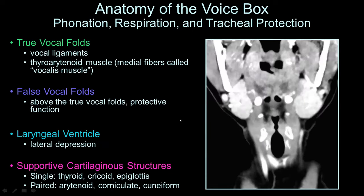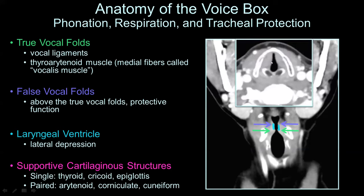You need to know the anatomy of the voice box, but you don't need to know all the complex structures of the larynx. Just remember that the larynx serves three main functions: phonation, respiration, and tracheal protection. You need to know exactly where the true vocal folds are located — these are the indentations where your vocal ligaments are. Just superiorly you see the false vocal folds, which serve a protective function. In between is the laryngeal ventricle. On an axial image, you can tell you're at the level of the vocal folds because you see the cricoid cartilage posteriorly.